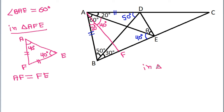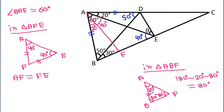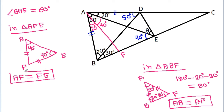In triangle ABF, angle ABF is 20 degrees and angle BAF is 80 degrees. So angle AFB will be 180 minus 20 minus 80, that is 80 degrees. Since angles ABF and AFB are both 80 degrees, AB equals AF. We already have AF equals FE, so AB equals AF equals FE.